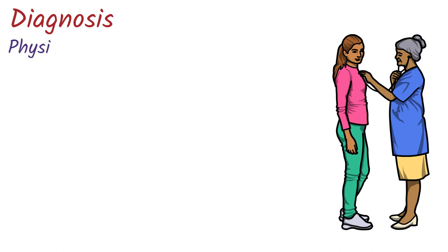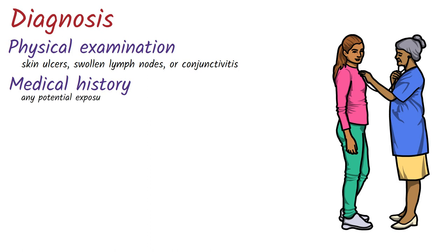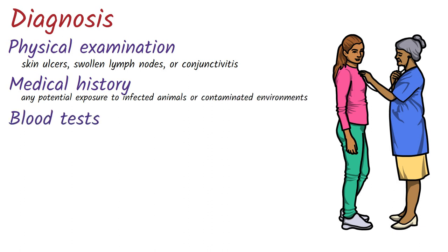Physical examination: The doctor will examine the patient and look for signs of infection such as skin ulcers, swollen lymph nodes, or conjunctivitis. Medical history: The doctor will ask the patient about their recent activities and any potential exposure to infected animals or contaminated environments. Blood tests can be used to detect the presence of the bacterium or antibodies against it, or to identify any changes in the body's normal functioning that may indicate infection.